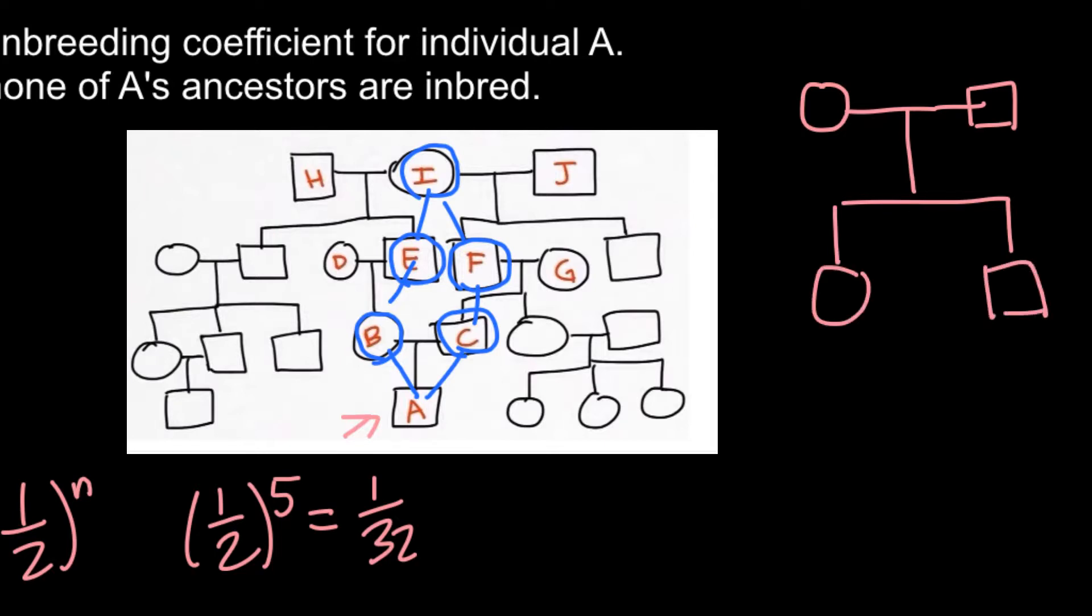So this is most likely what we can see in inbreeding of animals. And now these siblings would mate and would have a progeny. So what would be the inbreeding coefficient of this person?